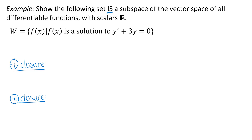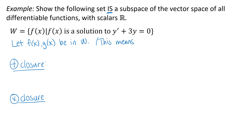To show additive closure, I want to show that if I start with two functions that are in this set and add them, the result is still in that set. So I'll start with two functions, f(x) and g(x), both in my set W. What that means is that both of those functions satisfy the differential equation — when I take appropriate derivatives and substitute into the differential equation for f(x) and for g(x), they make that equation true. That's the defining characteristic of what it means to be in that set.